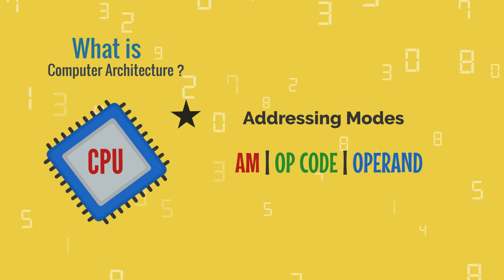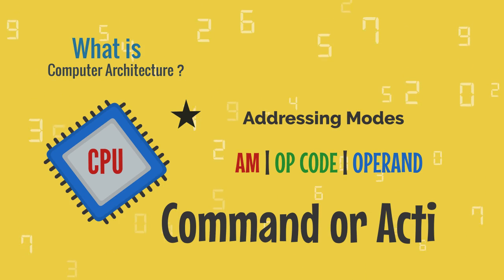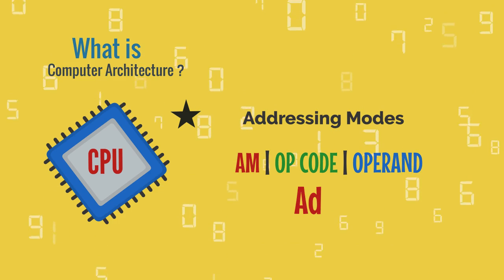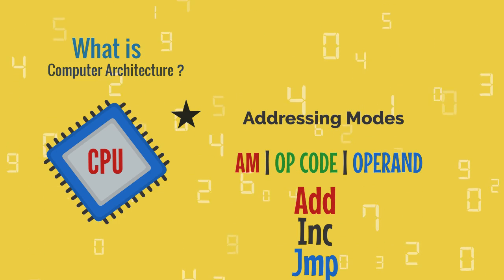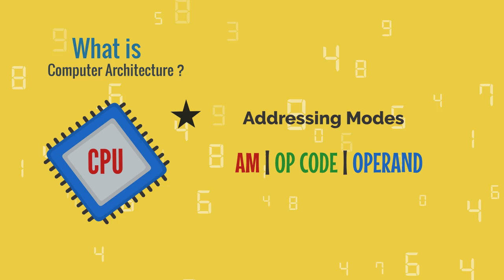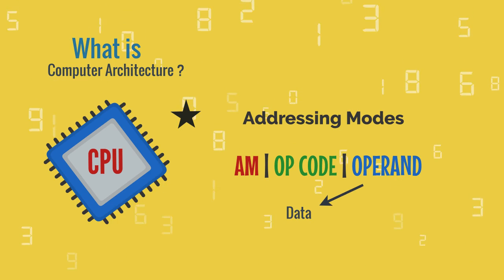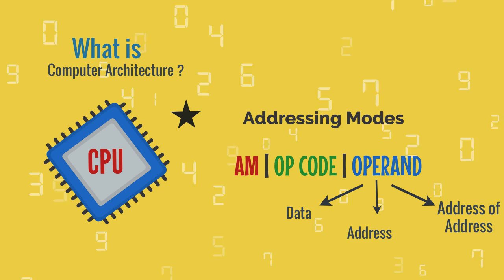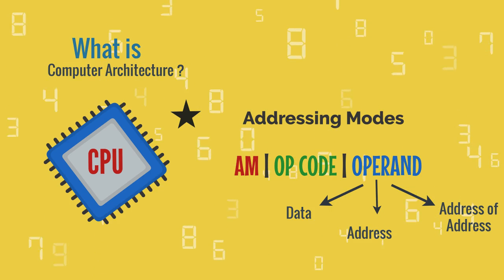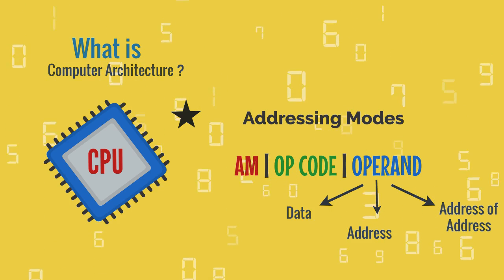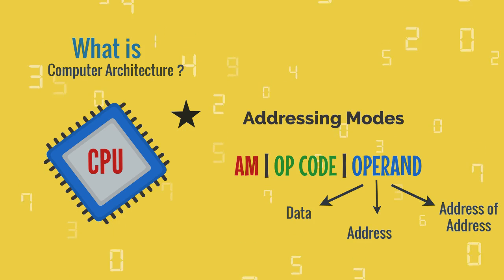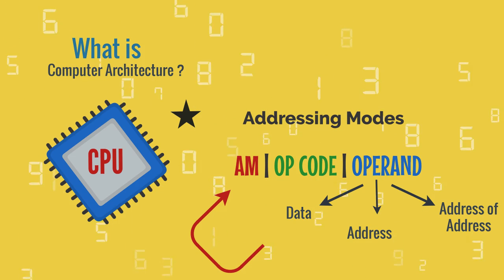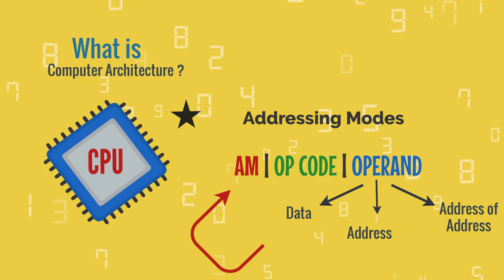Opcode is the operation code or action which is to be performed on data — for example, add, increase, or jump. Operand is the data, or address of the data, or address of the address of the data, on which the action is performed. It might be a register also. This is identified by the addressing mode.